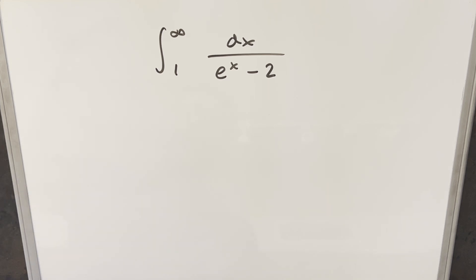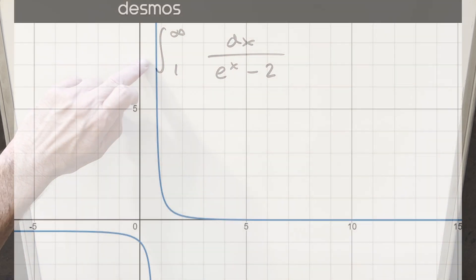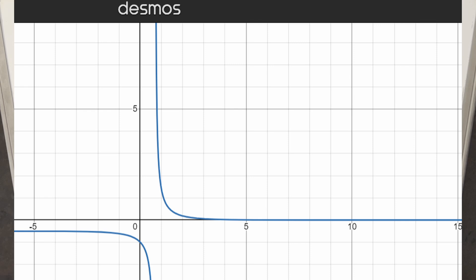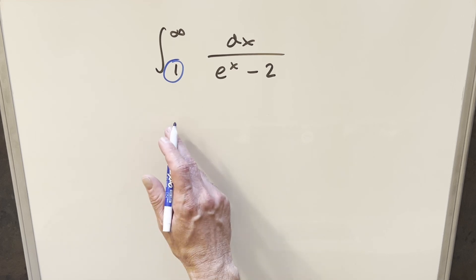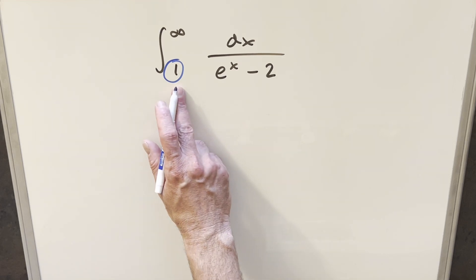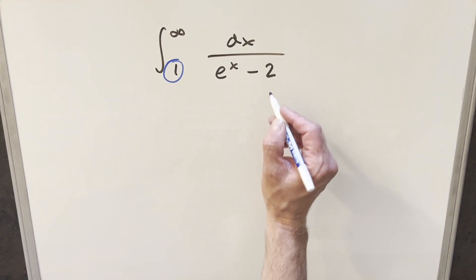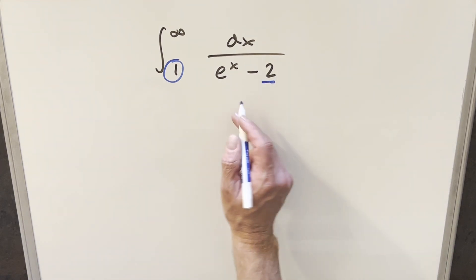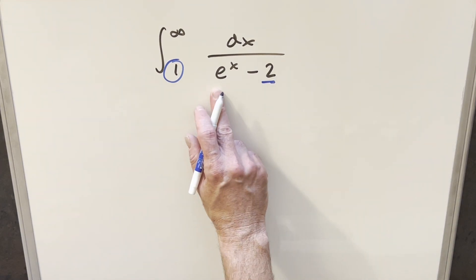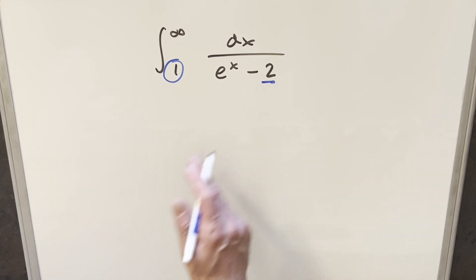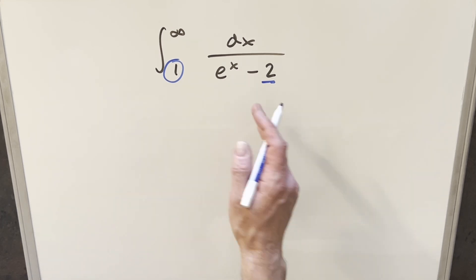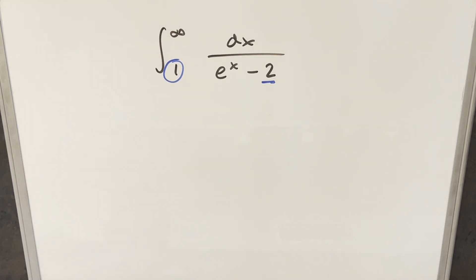The interesting thing, just kind of looking at the graph, the bounds are pretty important here. If this lower bound was actually going from 0 to infinity, the integral would diverge, because if you plug a 0 in here — if you had e to the 0, 1 minus 1 — you'd be dividing by 0. And looking at the graph, you can see it kind of goes off to infinity.